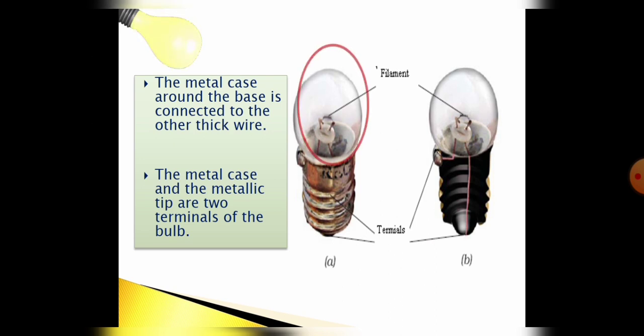Now one more important thing which I want to share with you is the structure of the bulb is made up of glass, and inside this bulb there are two gases: argon and nitrogen, which do not react, or we can say these are inert gases.